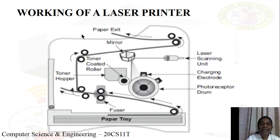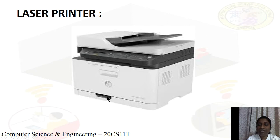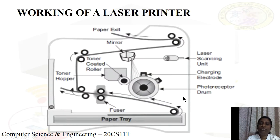This is the internal structure of the laser printer. This is the external view — it looks like a photocopy machine. Here we feed the paper, and after printing the data, it will come out this side. This is the paper tray; we remove the tray and feed the paper into it. After printing, the paper comes out, and all the processing is done inside the laser printer.